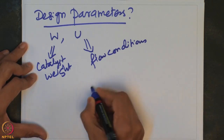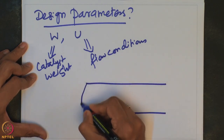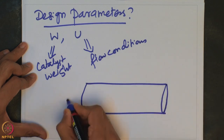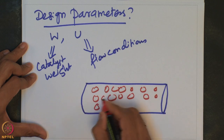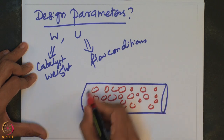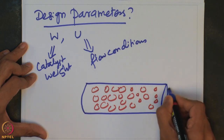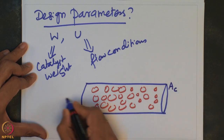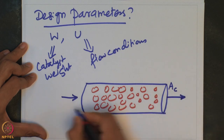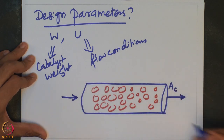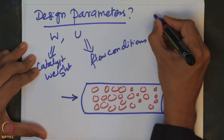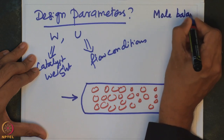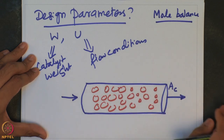Let us sketch a packed bed reactor. It is filled with catalyst. Let us assume that the cross-sectional area of the reactor is Ac, and the fluid is actually flowing through the reactor. This is the entry to the reactor and this is the exit of the reactor where the fluid stream is leaving. We can write a mole balance in order to quantify the process that is happening in a packed bed reactor.